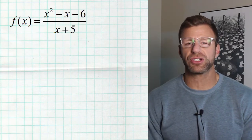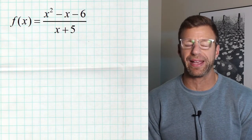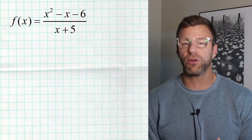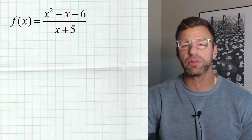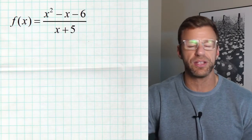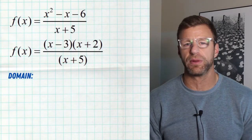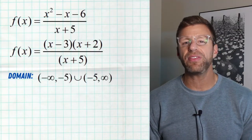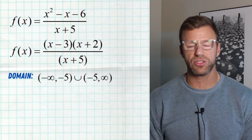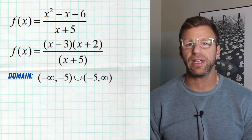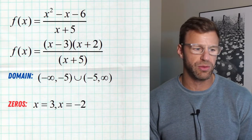In this first example, we see a basic rational function in standard form. When it comes to talking about zeros, vertical asymptotes, and holes, we want it to be in factored form — it's just a lot easier to process. So first, any number that turns the denominator into zero must be excluded from the domain. Negative five makes the denominator zero, so our domain is negative infinity to negative five, and negative five to infinity — basically all real numbers except for negative five. Now looking at the numerator, we see three and negative two. Both are in the domain, so this rational function has two real zeros: three and negative two.